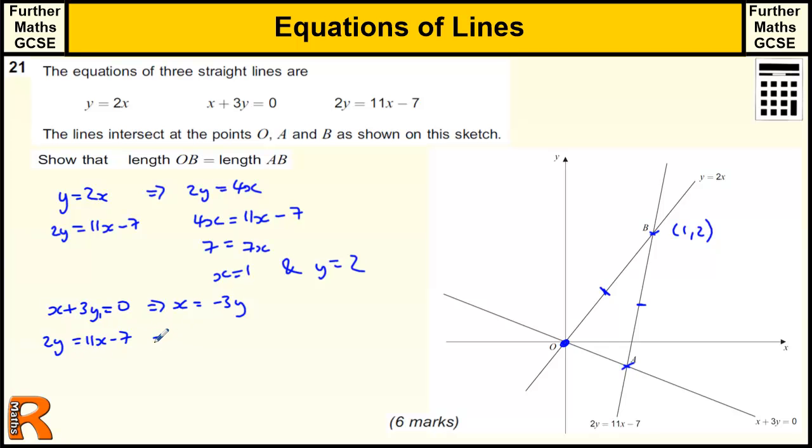So that gives me 2y equals 11 times minus 3y minus 7. So I've got 2y equals 11 lots of minus 3 is minus 33y, take away 7. Add 33y to get 35y. And that's equal to minus 7. So y equals minus 7 over 35, which looks a bit awkward, but if you cancel it down, we get minus 1 fifth, which isn't too bad.